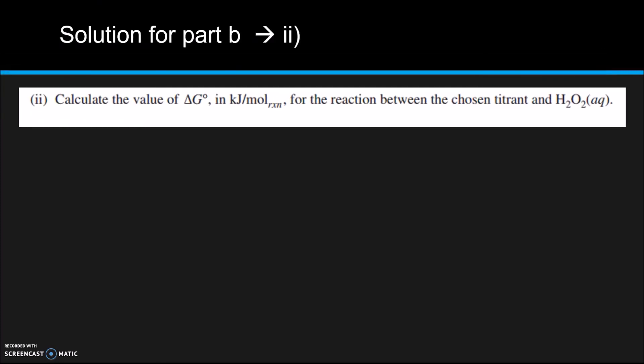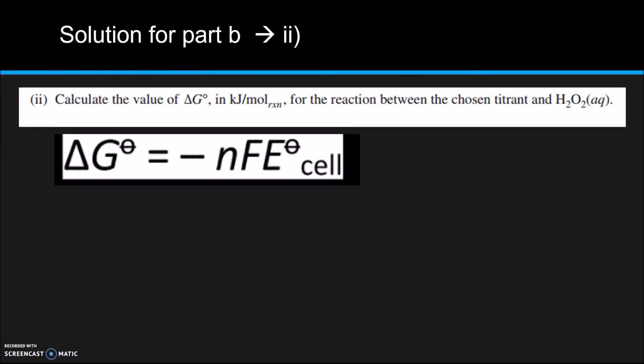Okay, so that's it for the first part for part B. The second part asks you to calculate the value of ΔG in kilojoules per mole of reaction for the reaction between the chosen titrant and H₂O₂ aqueous. So we're going to again use this equation, and this part should honestly be a breeze if you got the first part in part B, because all we're going to do is plug in the values that we found earlier.